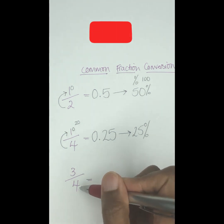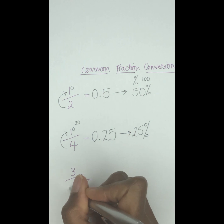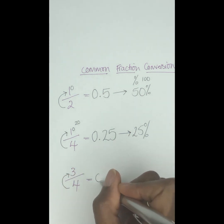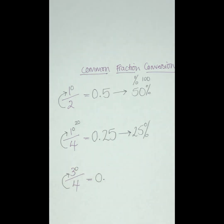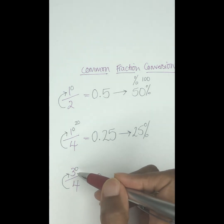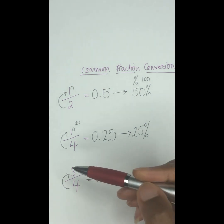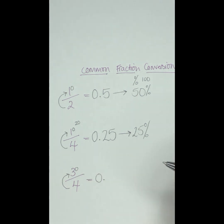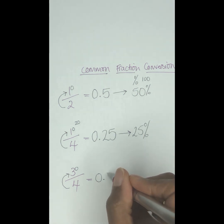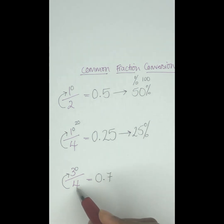Here we have 3/4. Same strategy, we're dividing the 4 into the 3. Can it go? No. So you're going to put zero, decimal, and then a zero here. So 4 into 30. So the closest we can get there, because there's no 30 in the 4 times table, the closest we can get there is a 7, because 7 times 4 is 28. How far is 28 away from 30? You're 2 away.